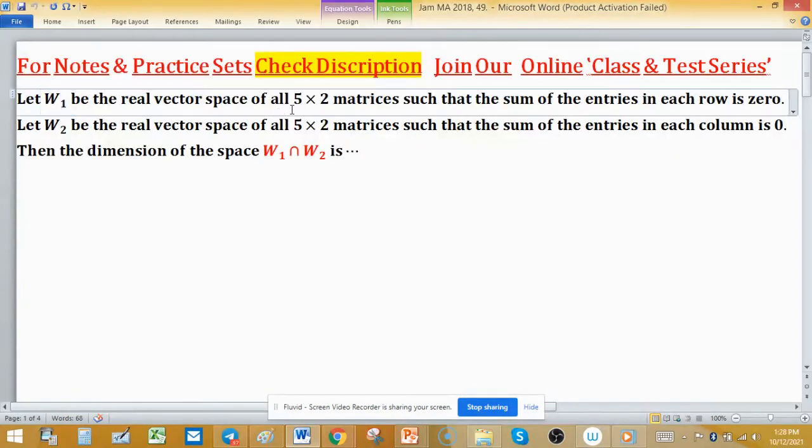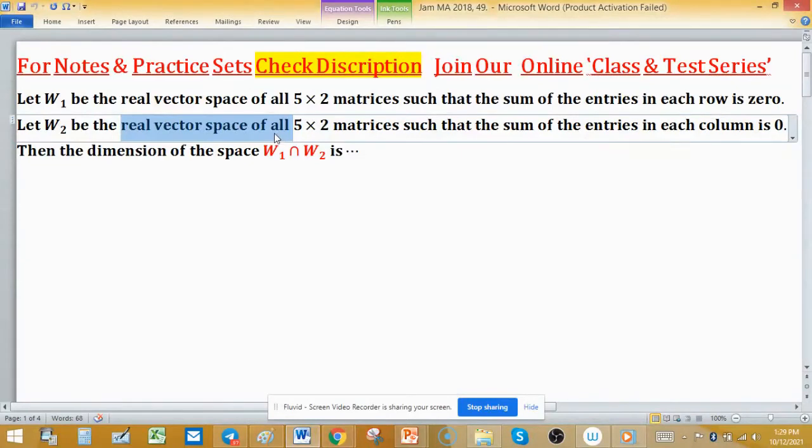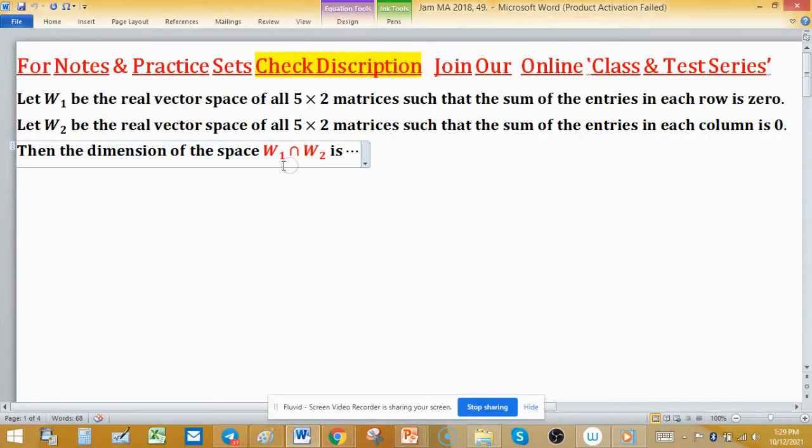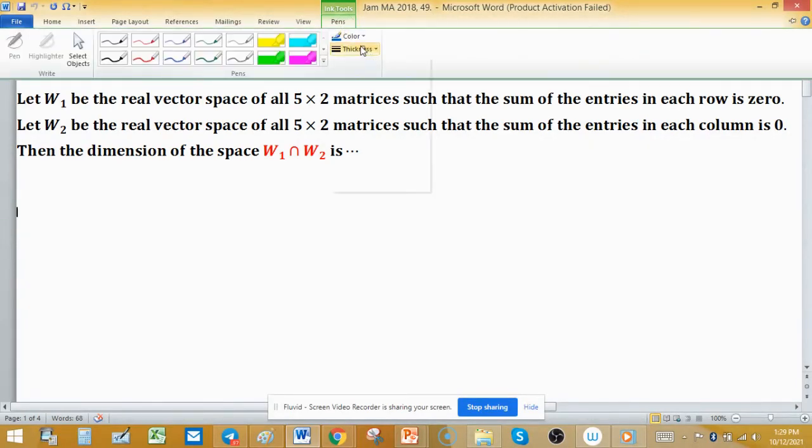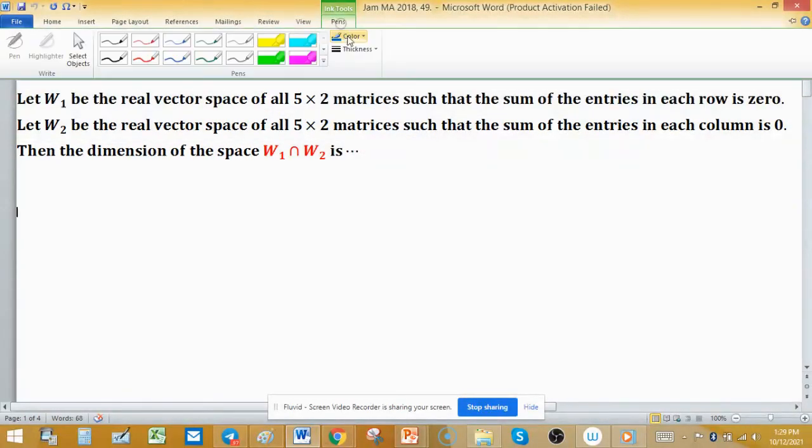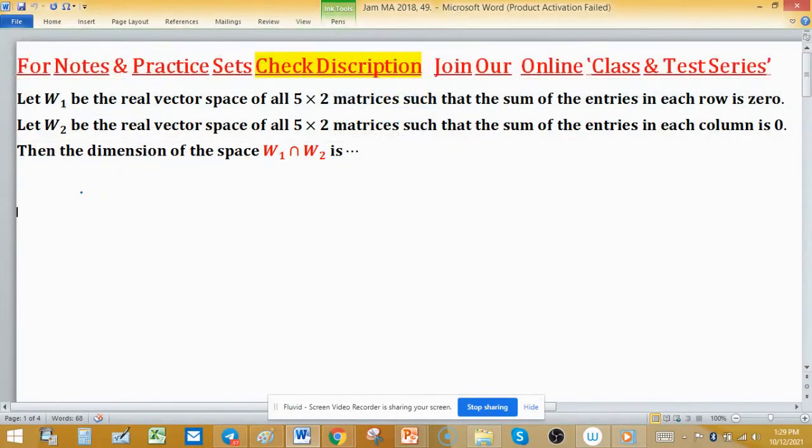Let W1 be the real vector space of all 5×2 matrices such that the sum of the entries in each row is 0, and W2 be the real vector space of all 5×2 matrices such that sum of the entries in each column is 0. Then the dimension of the intersection of these two... As we know that W1 contains 5×2 matrices and structure of these matrices you can see, this is W1.